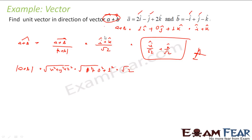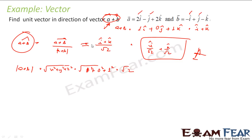Pretty simple — not a difficult question. You have some vector, you find the resultant vector, and the unit vector is just that vector divided by its magnitude. You get a vector in the same direction but with magnitude 1.